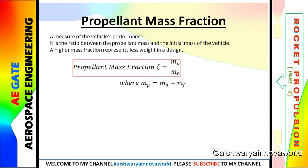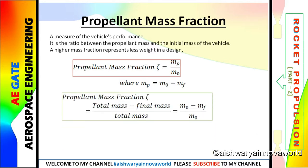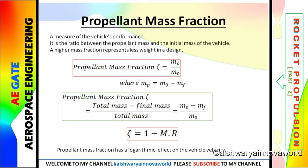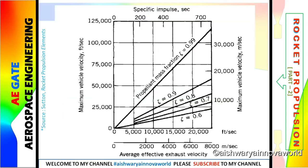From the relation M0 equals Mp plus Mf, we can write Mp equals M0 minus Mf. So propellant mass fraction tau equals total mass minus final mass divided by total mass, which simplifies to tau equals 1 minus MR. Remember, mass fraction has a logarithmic effect on vehicle velocity. As we increase the mass fraction, velocity increases with respect to specific impulse. So mass fraction depends on both vehicle velocity and specific impulse.